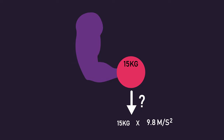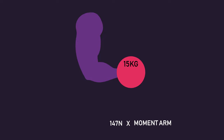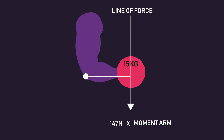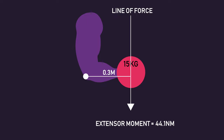To calculate this extensor moment, we first calculate the force the dumbbell is applying downwards. This is done by multiplying the weight of the dumbbell by gravitational strength. As the dumbbell here weighs 15 kilograms, we multiply this by 9.8 meters per second squared, the gravitational strength, to get 147 newtons of force applied downwards. We then multiply this by the moment arm — the perpendicular distance from the line of force to the centre of the joint, so the elbow in this case. Let's say this is 0.3 meters. So, 147 newtons multiplied by 0.3 meters equals 44.1 newton meters. Therefore, the extensor moment is 44.1 newton meters.